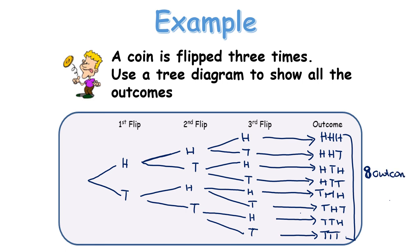We could have used the fundamental principle of counting: 2 outcomes by 2 outcomes by 2 outcomes equals 8. But they wanted us to list all the outcomes. With heads and tails, they'll all have the same chance, so each outcome has a 1 in 8 chance of occurring.